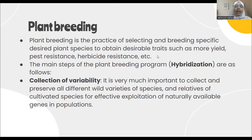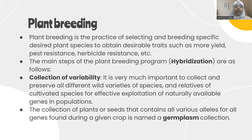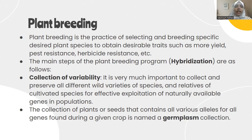Germplasm collection can be done either in situ or ex situ. In situ, it can be done with the help of forests and natural reserves. Ex situ, you can collect these varieties in the form of botanical gardens and seed banks. Variations are useful in selection - once you have collected all wild varieties with all possible different alleles, it becomes easy to select what you desire to see in your first-generation plant.